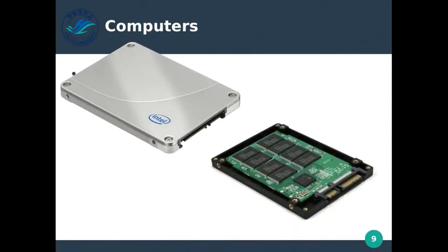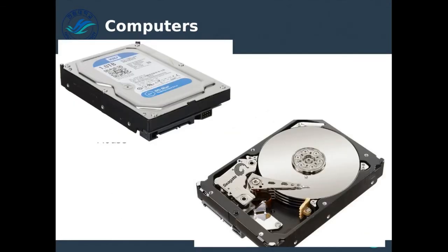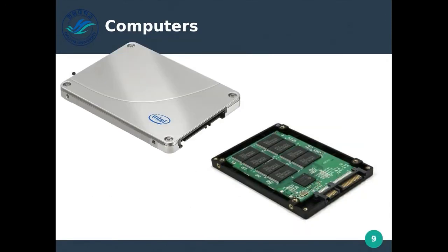Another type of hard drive that's newer, faster, but also more expensive is solid state disks. Inside the case it looks like chips — there's also a SATA connector to the motherboard. Unlike hard disk drives where disks spin and the arm moves back and forth, on solid state disks nothing moves. It's just chips. But it is more expensive to store data inside these chips.